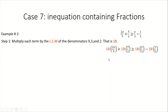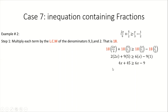Multiplying each term by the LCM eliminates the fractions. Simplifying: 9 into 18 gives 2, so 2 times 2x gives 4x. Then 2 into 18 gives 9, so 9 times 5 gives 45. On the right side: 3 into 18 gives 6, so 6 times x gives 6x. And 2 into 18 gives 9, so negative 9 times 1 gives negative 9. Our inequality becomes 4x + 45 ≥ 6x − 9.